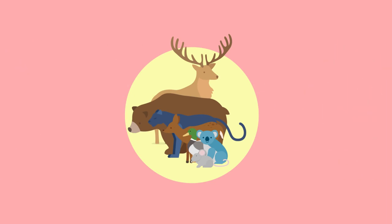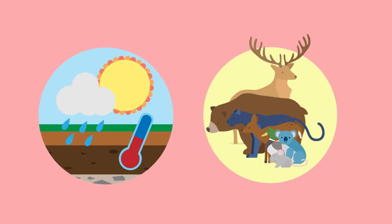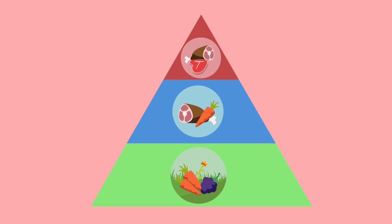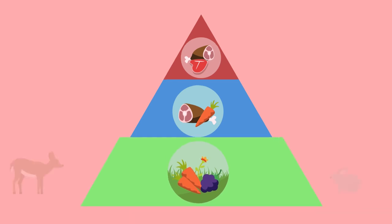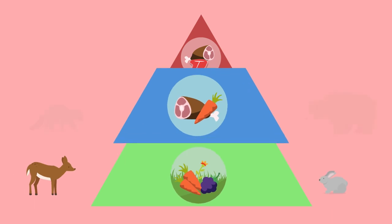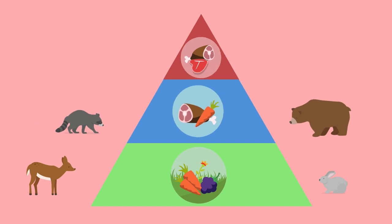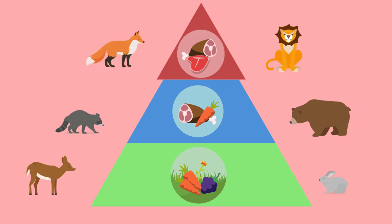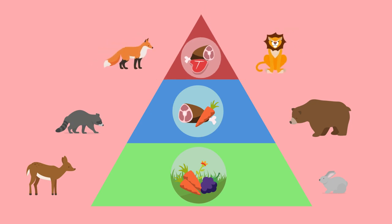The biotic components of an ecosystem also interact with one another, much like the abiotic components. One of the best examples of this is how the various trophic levels interact with each other. A trophic level is how scientists classify animals based on their food preferences. At the lowest trophic level are the herbivores, those animals that primarily eat plants. In the next highest trophic level are the animals that eat herbivores as well as some plants, known as omnivores. The highest trophic level is the carnivore, represented by animals such as wolves, lions, and eagles.